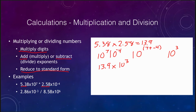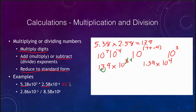That result is not in standard form, so we move the decimal point one place to the left and increase the exponent by 1, from 3 to 4. Our final answer is 1.39 times 10 to the 4th power.